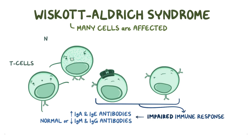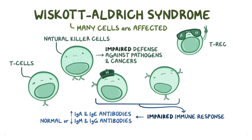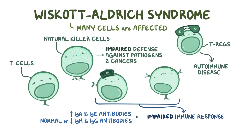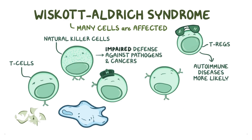T-cells and natural killer cells are also unable to form normal immunological synapses, which impairs their ability to defend against pathogens and cancers. Regulatory T-cells are also prevented from doing their job, making autoimmune diseases more likely. Lastly, phagocytic cells like macrophages struggle to move around, making it harder for them to clean up debris.